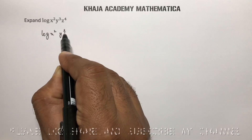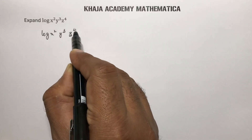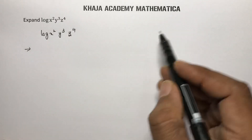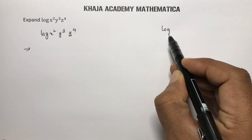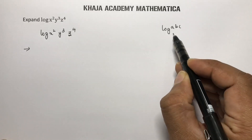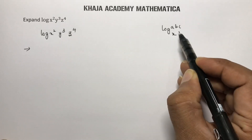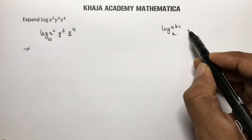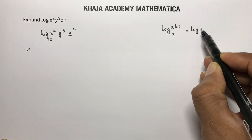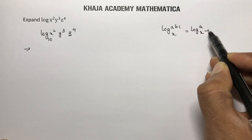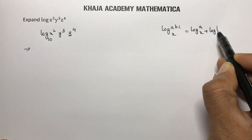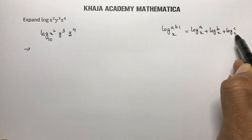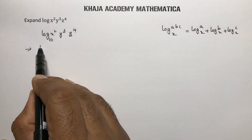Expand log x² y³ z⁴. This is in the form of log(a·b·c). The logarithm of a product: log(a·b·c) to the base x equals log a to the base x plus log b to the base x plus log c to the base x. If the base is not given, you can take base 10.